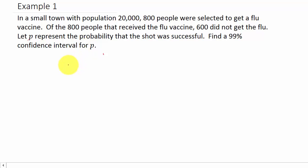Let's go ahead and find P hat, which is R over N. R is the number of successes, so that's 600. So that's 600 over N, and N is the total number that received the flu vaccine, which in this case was 800.